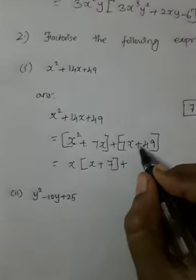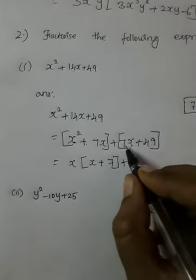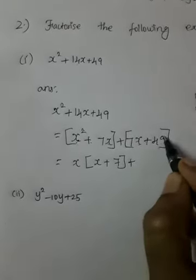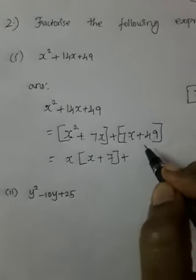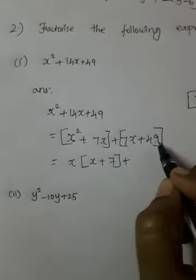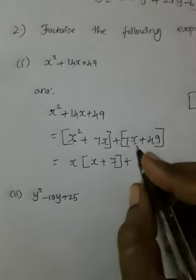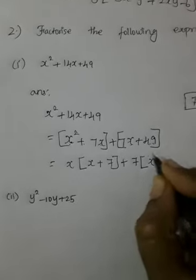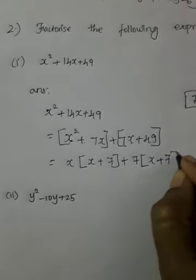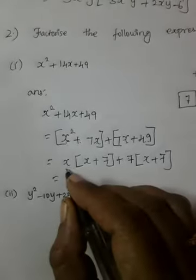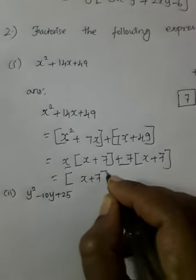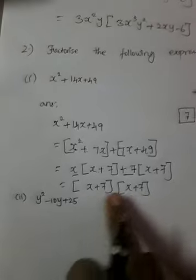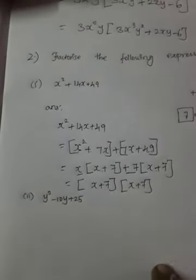For the second group, 7x plus 49: there is no x in 49, so take the number 7 outside — since 7 × 1 = 7 and 7 × 7 = 49 — leaving x plus 7 inside. Both groups give x plus 7, so write it only once. The final answer is (x + 7)(x + 7).